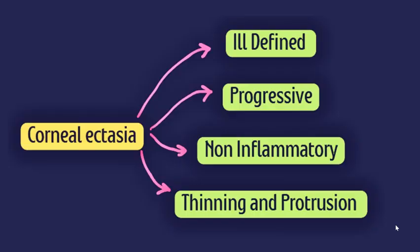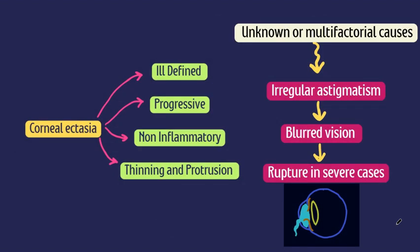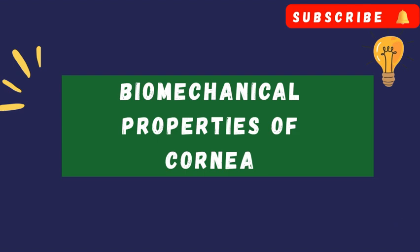That is corneal ectasia. Medically speaking, corneal ectasia refers to an ill-defined, progressive, non-inflammatory thinning and protrusion of the cornea. The exact causes are still a mystery, but multiple factors are involved. This weakening leads to irregular astigmatism and blurred vision over time, and in very severe cases it can even cause rupture of the cornea.